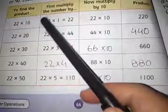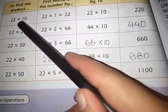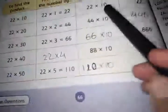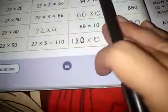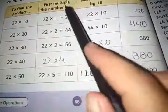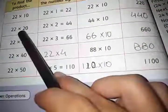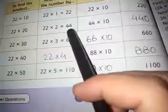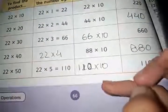To find the product 22 multiplied by 10, first multiply the number by the digit which is on 10th place, means 1. Then the number will be multiplied with 10. In all these questions, the formula is same. First, the number is multiplied with the digit which is on 10th place, then the product is multiplied with 10 to find the final product.